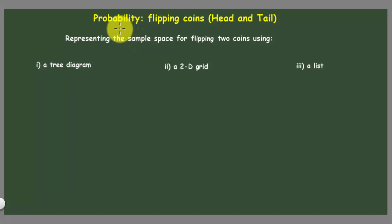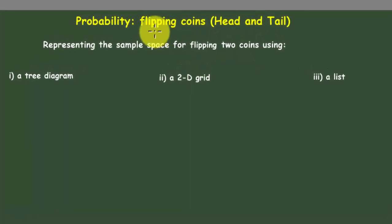Hello guys, in this video we're going to represent the sample space for flipping two coins. When flipping two coins, you only have two possibilities: either you have a head or a tail.